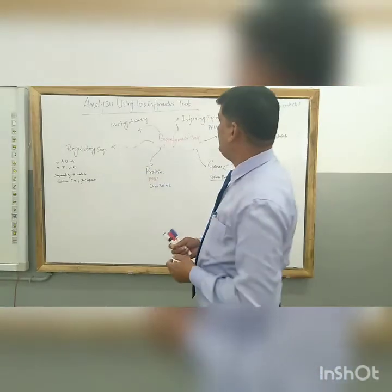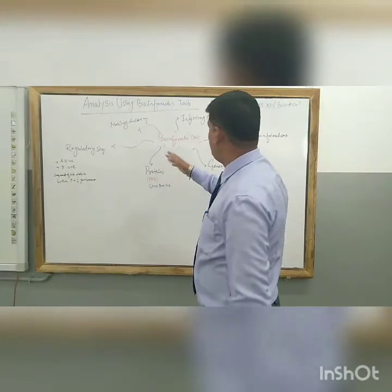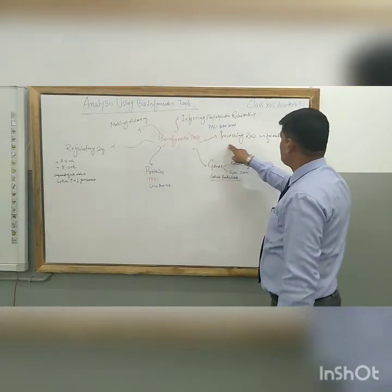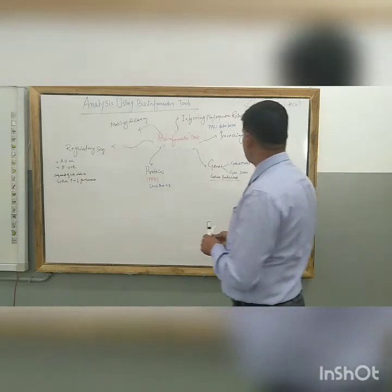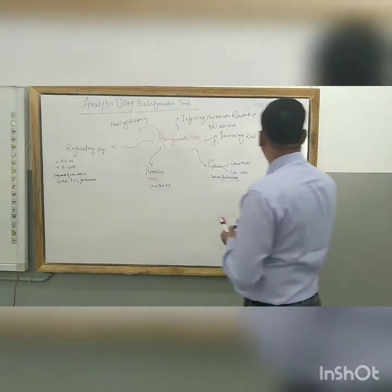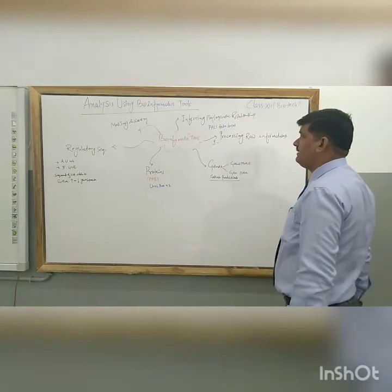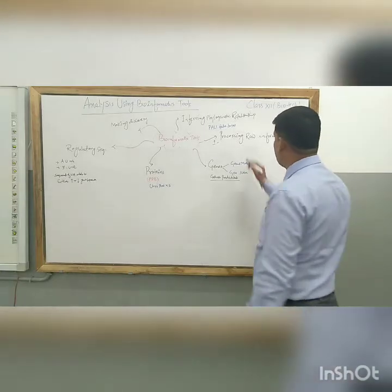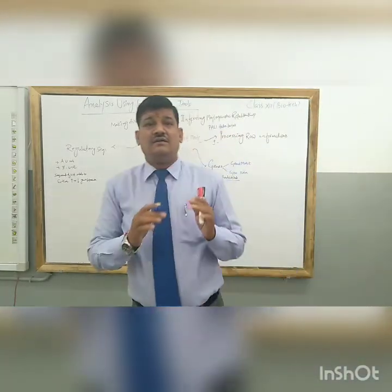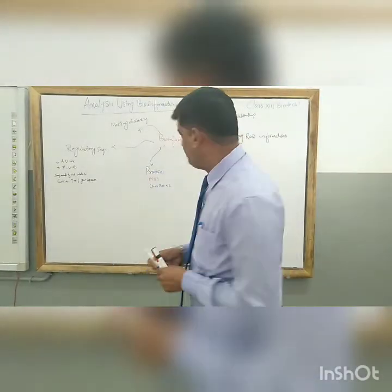There are many kinds of analysis. For example, the first one is processing raw information. How are bioinformatics tools applicable to find out that information? As we know, the central dogma of molecular biology speaks about this concept.